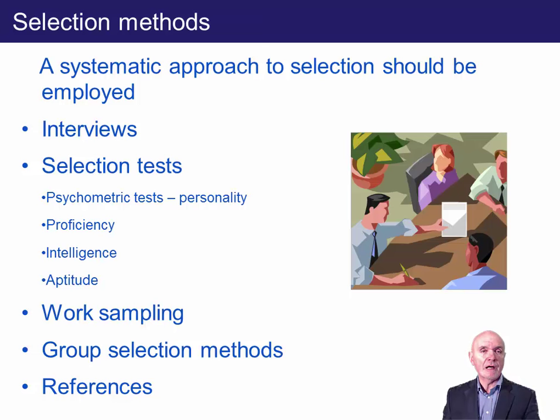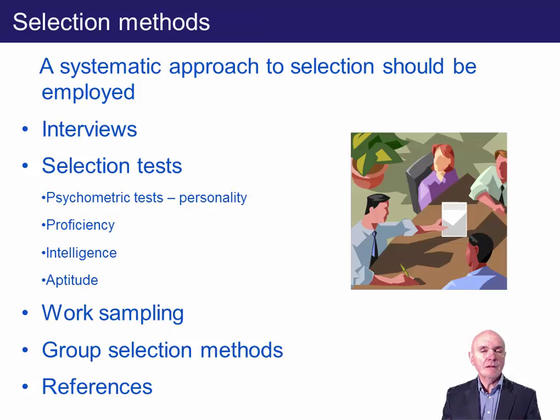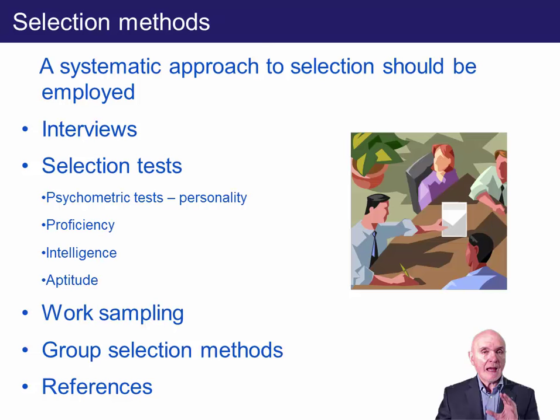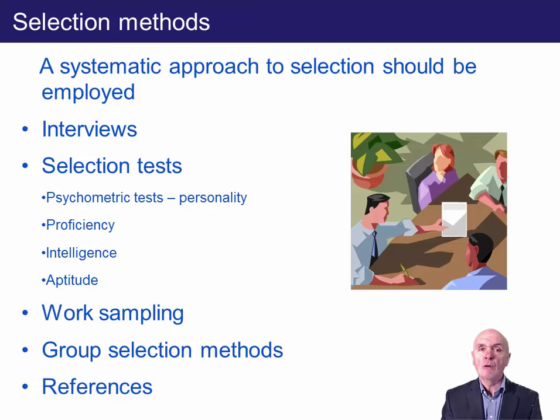Typically in group selection you take a group of candidates away for a weekend with group exercises, team exercises, and case studies to solve. They're observed to see how they lead the group, deal with discussions, overcome objections, and how good they are at inspiring others. After the person has been offered the job and accepted, it's advisable to take up references with their current employers — checking factual things like start date, salary, and current grade to make sure candidates aren't inflating their qualifications.